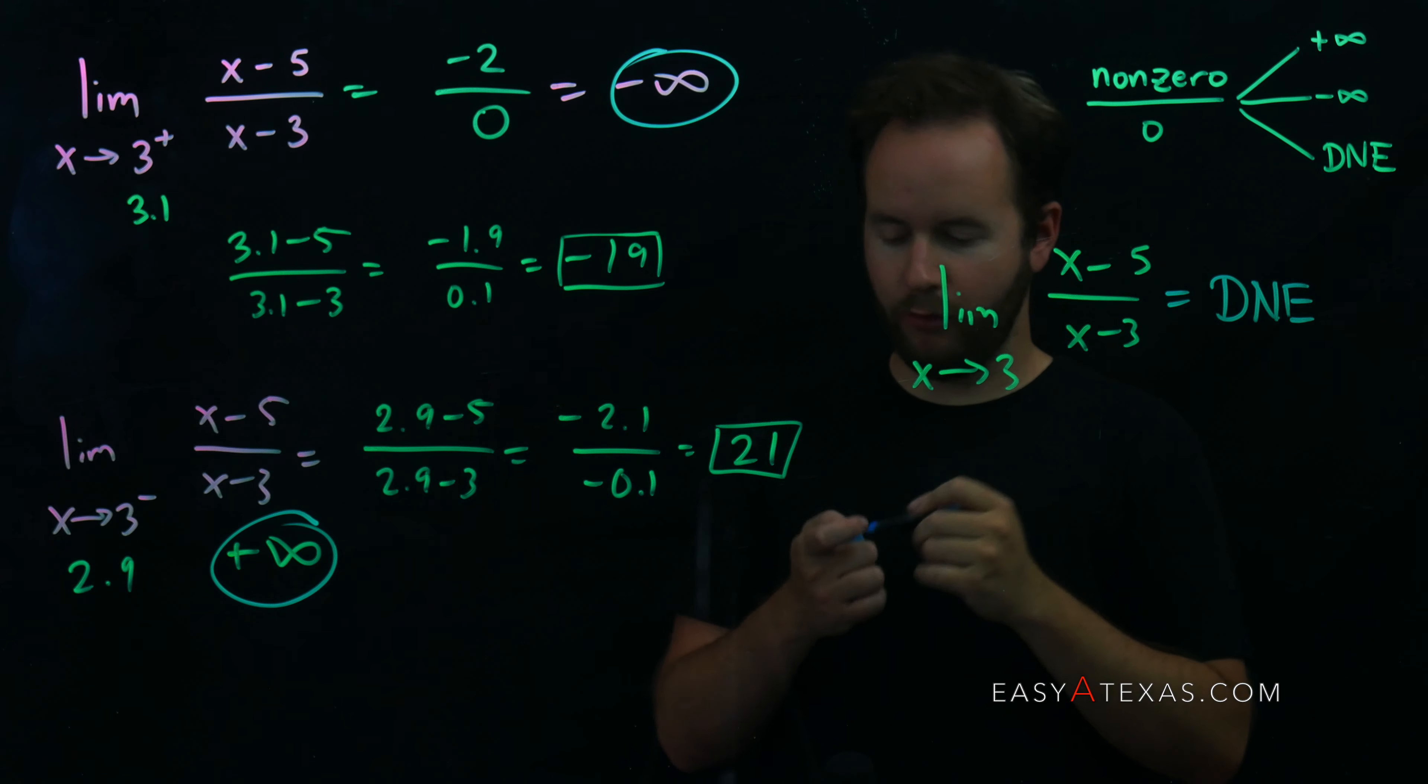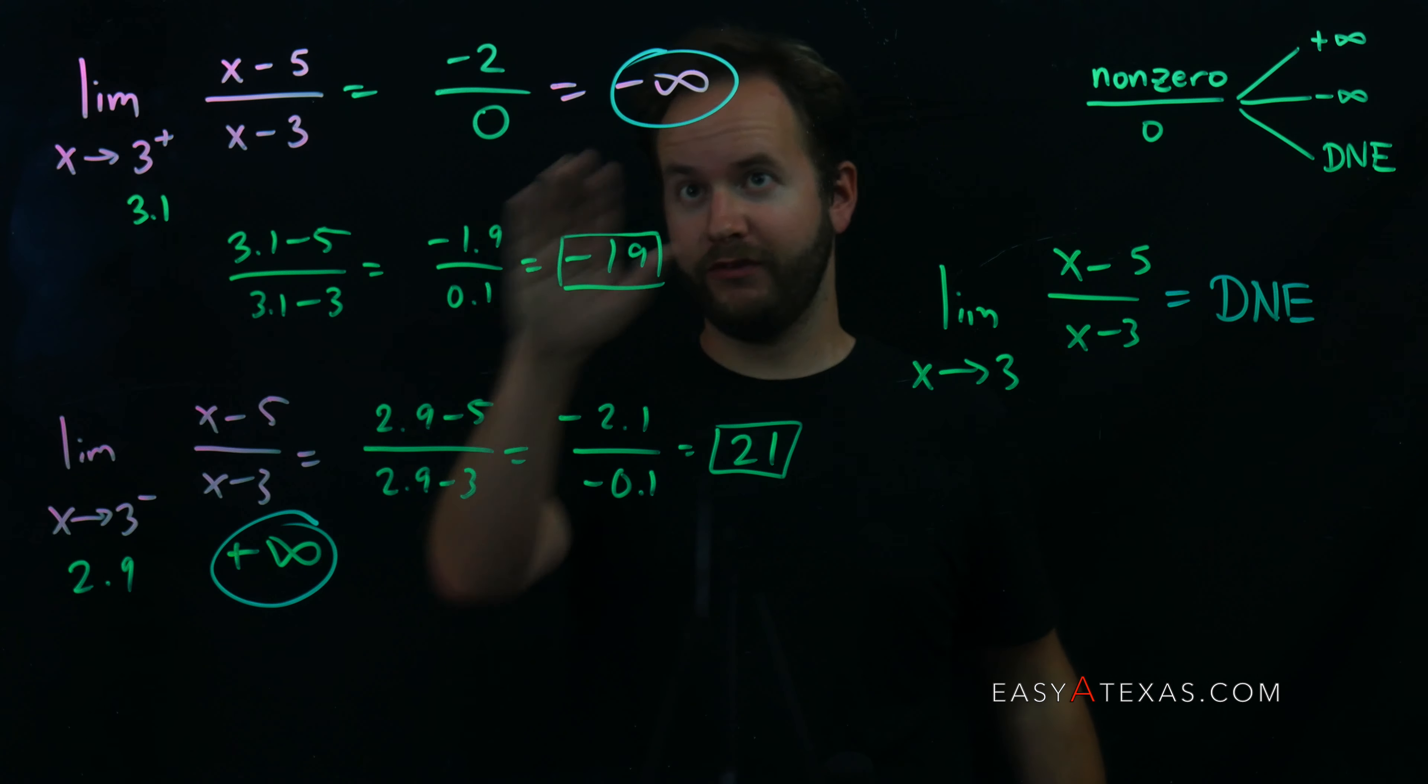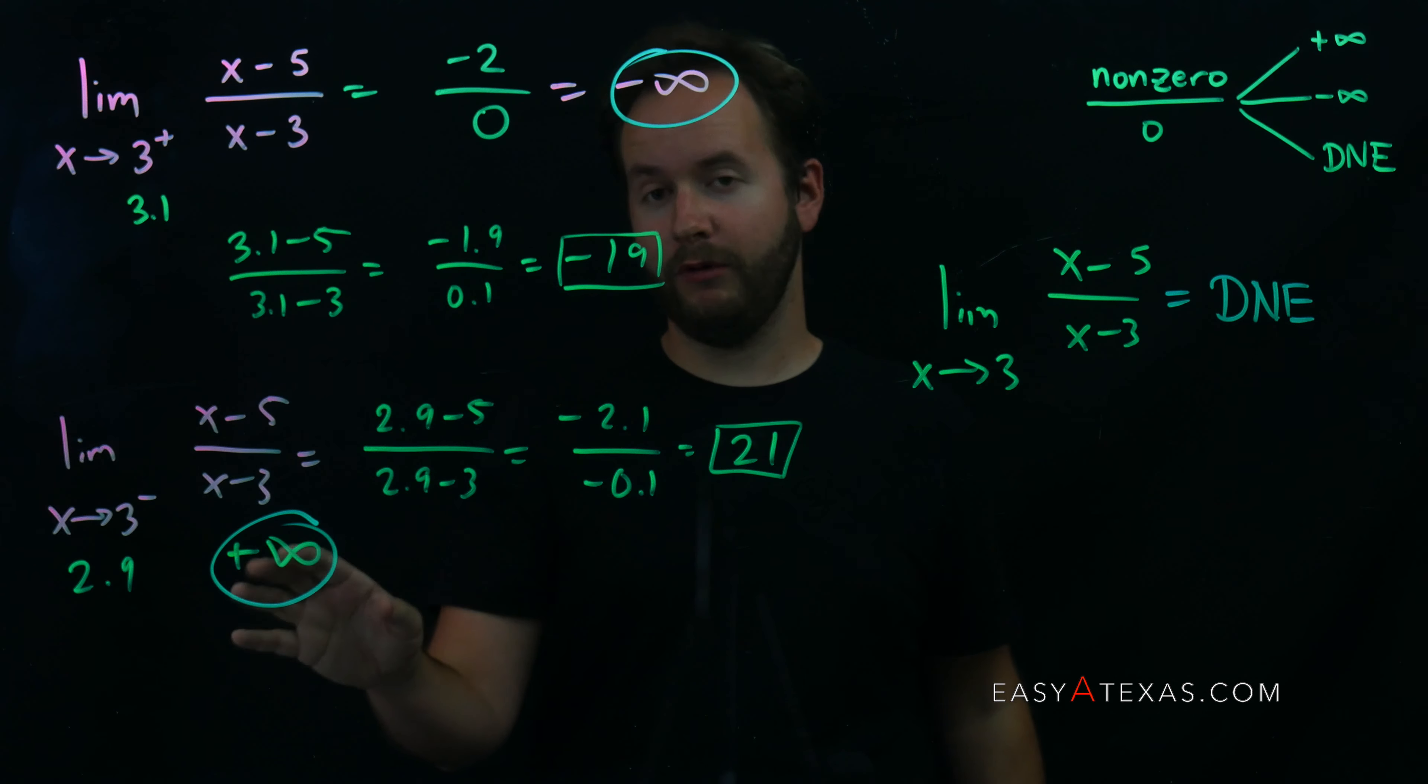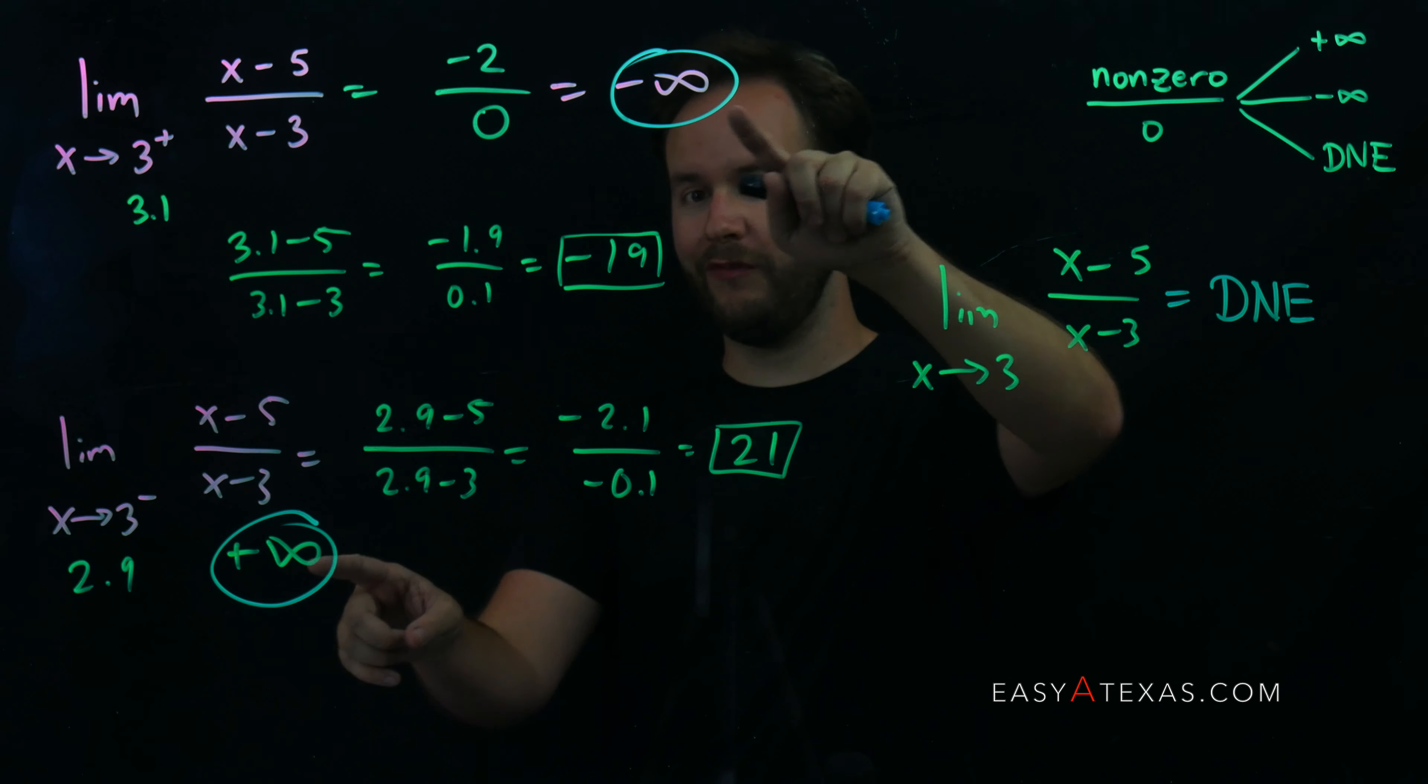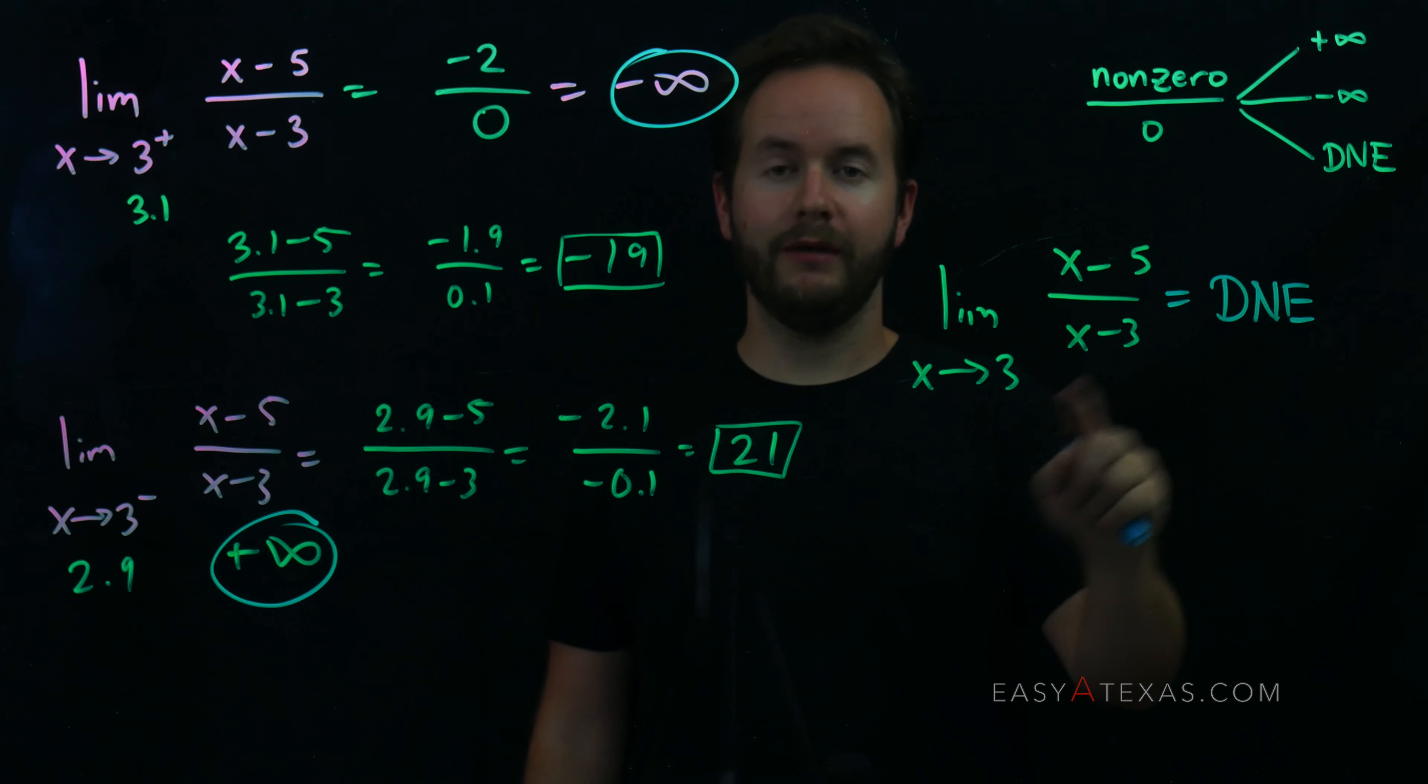Let me go ahead and clarify a little bit more. If it had been the case that this was negative infinity and our left-hand limit was negative infinity, then this limit would have been negative infinity. But because they're two different infinities, this two-sided limit does not exist.